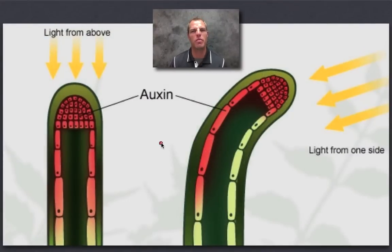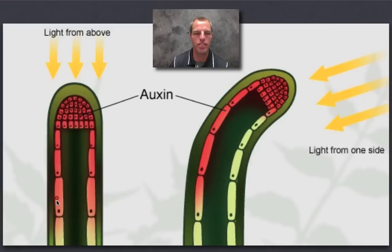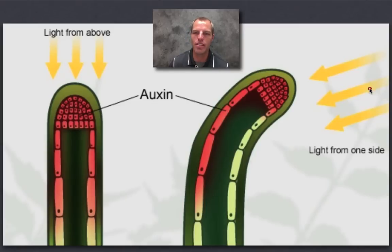Just remember: auxin moves to the dark side just like Anakin. When the Sun is directly above, the tip of the shoot releases the hormone equally down both sides, elongating cells on both sides so the plant grows straight up. When light comes from the side, auxin gets distributed down the dark side.